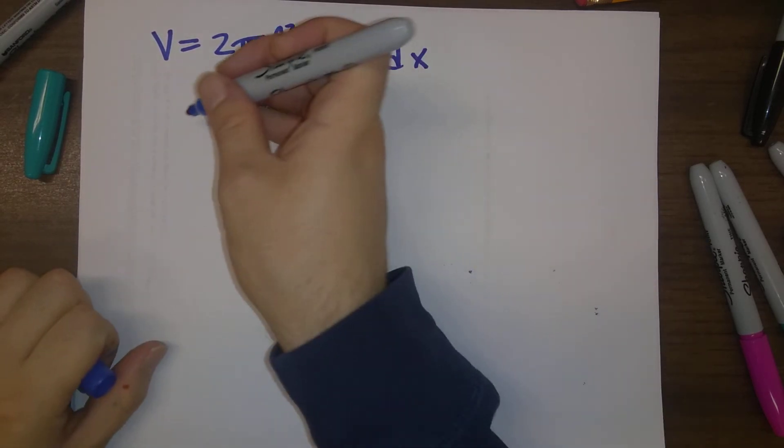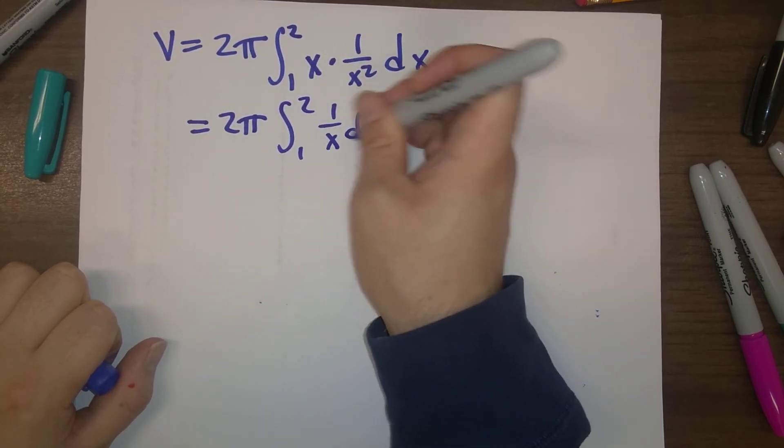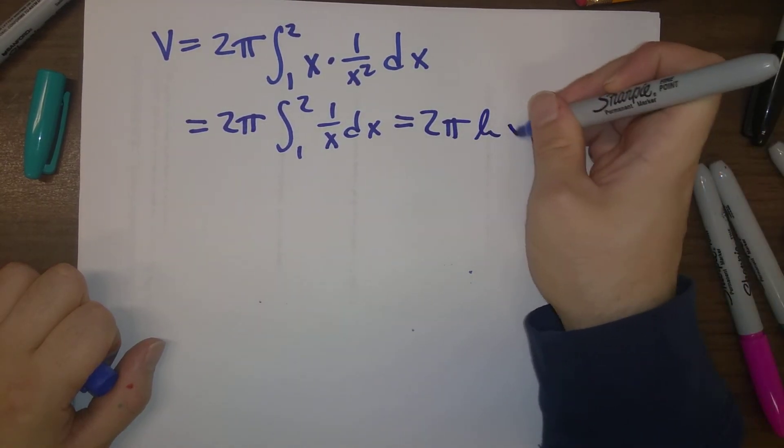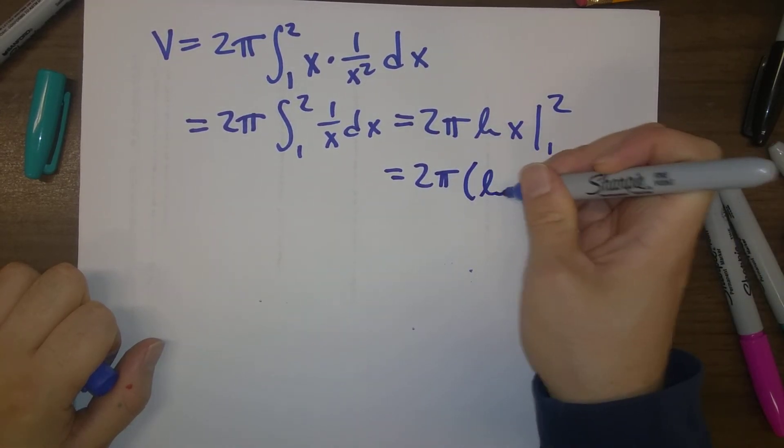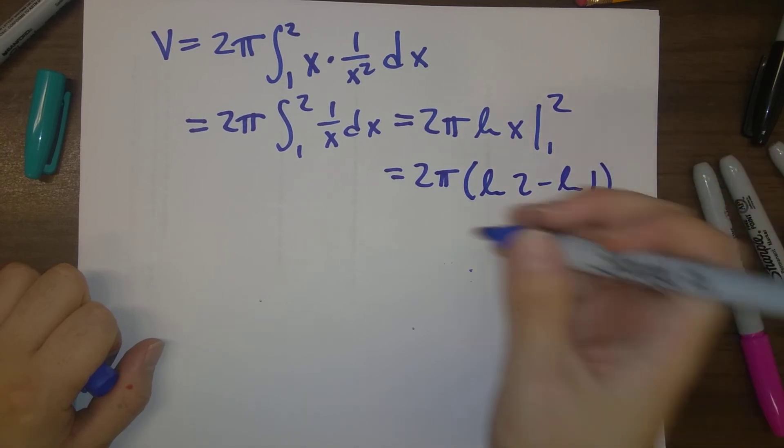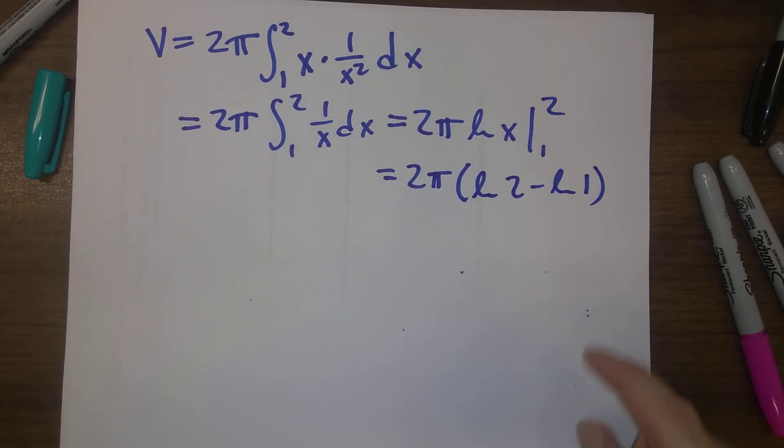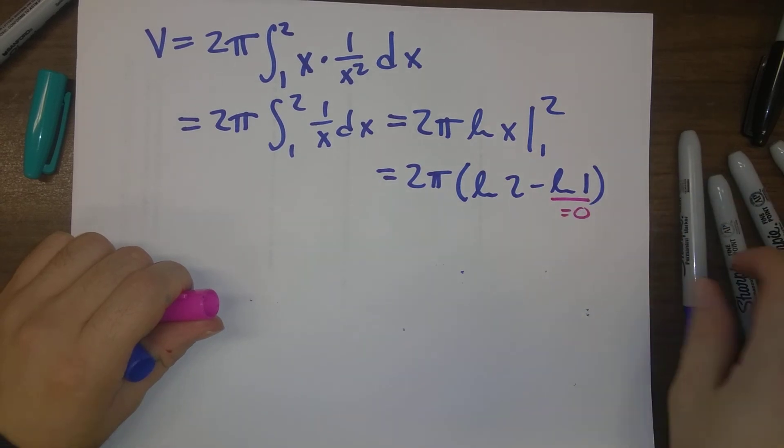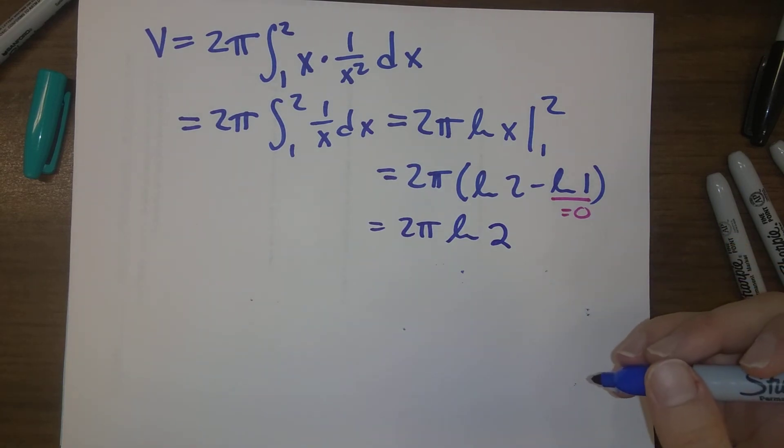Pretty straightforward integral for us to do. So let's do this integral. x times 1 over x squared is 1 over x. That integrates to natural log of x. Let's evaluate that between 1 and 2. And so we have natural log of 2 minus natural log of 1. We can't simplify that natural log of 2, but we can simplify natural log of 1 because we should know that that's equal to 0. So our final answer here is just 2π times natural log of 2.